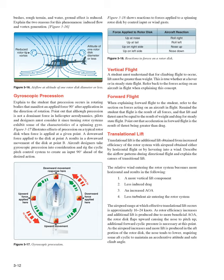Gyroscopic precession: explain to the student that precession occurs in rotating bodies that manifest an applied force 90 degrees after application in the direction of rotation. Although precession is not a dominant force in helicopter aerodynamics, pilots and designers must consider it since turning rotor systems exhibit some of the characteristics of a spinning gyro. A downward force applied to the disc at point A results in a downward movement of the disc at point B. Aircraft designers take gyroscopic precession into consideration and rig the cyclic pitch control system to create an input 90 degrees ahead of the desired action.